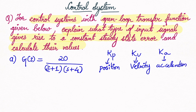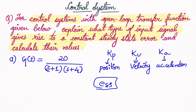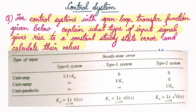These constants — Kp, Kv, and Ka — relate to steady state deviation in output position. We find them to determine the ability of the system to reduce or eliminate the steady state error, represented as ESS. To find Kp, Kv, and Ka, the first step is to identify which type of system this is. Always remember the table for that — it is very important.